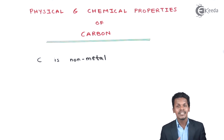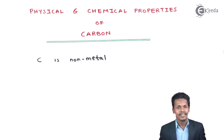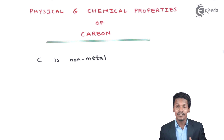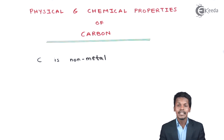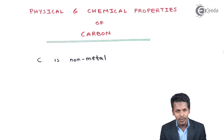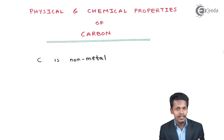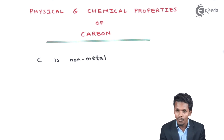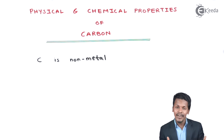Carbon has various allotropes, as we have discussed earlier — diamonds, fullerenes, and graphite. Some of these can also conduct electricity, like graphite and fullerenes. Carbon is not reactive with water molecules, and that is the reason carbon is used in electrolysis for decomposition of water molecules to liberate H2 as well as O2, using graphite rods.